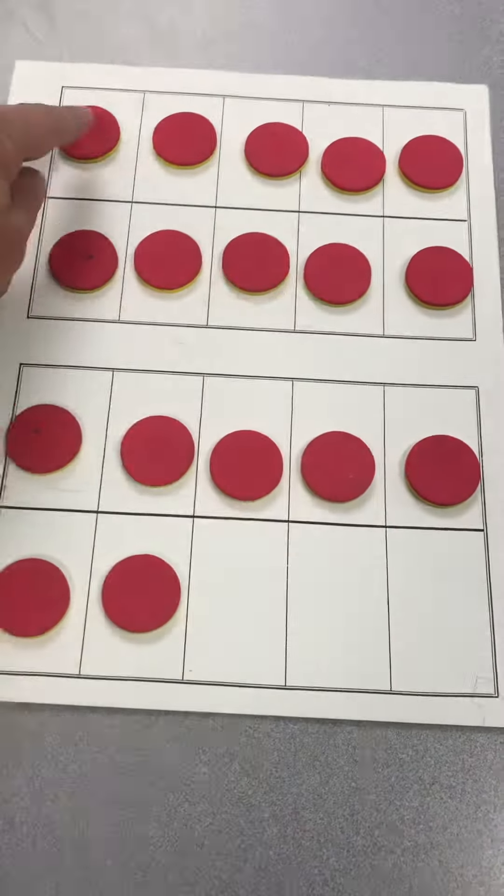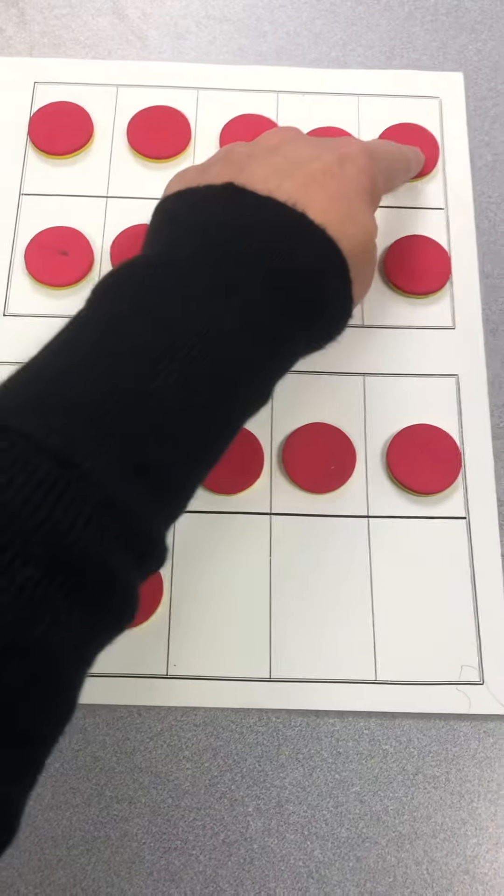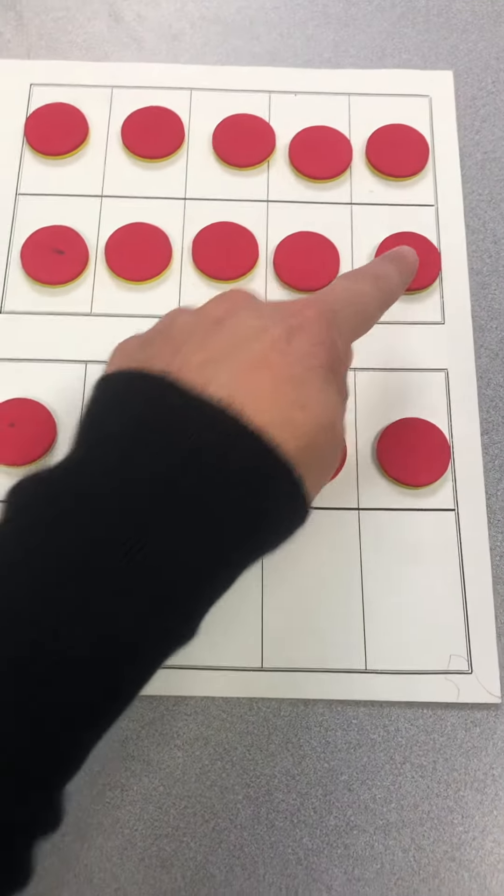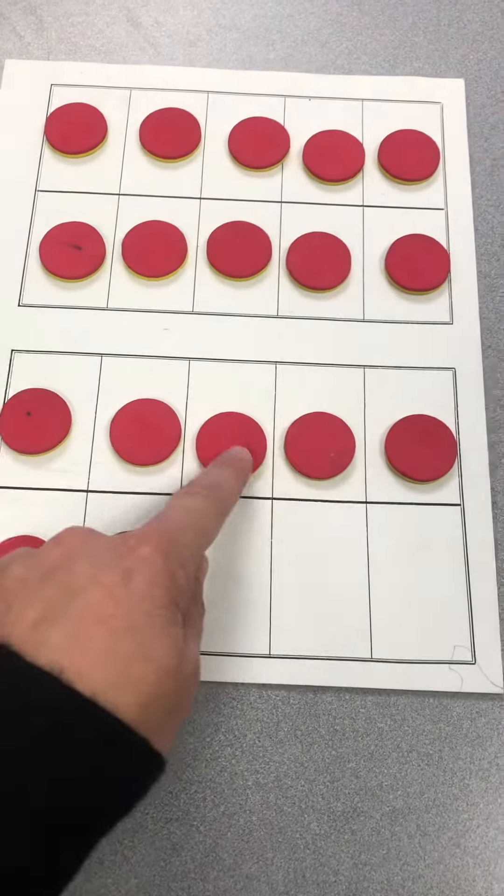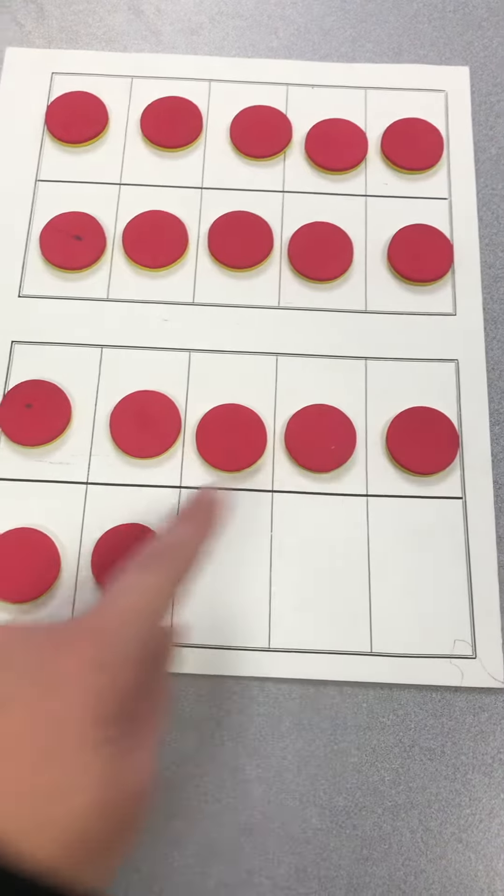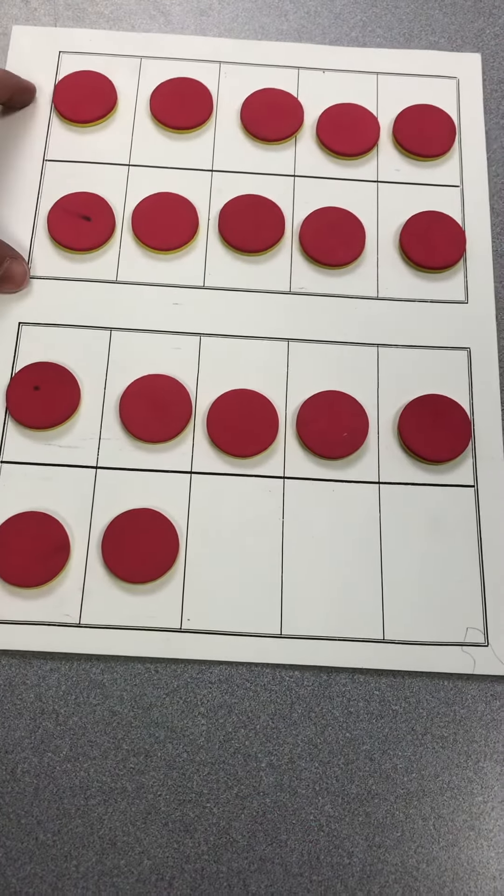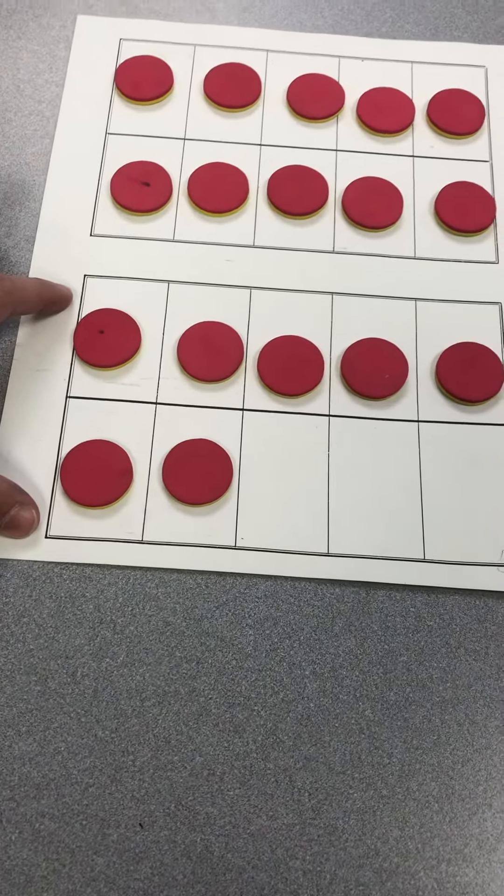Okay, so if you counted them, this would be 1, 2, 3, 4, 5, 6, 7, 8, 9, 10, 11, 12, 13, 14, 15, 16, 17. It's a group of 10 and 7 extras.